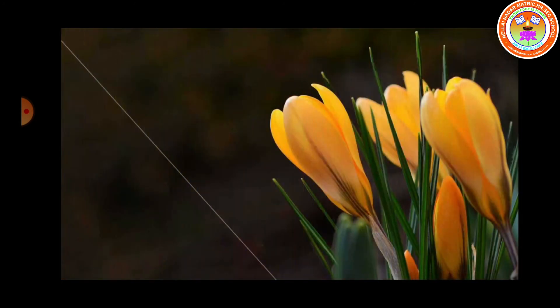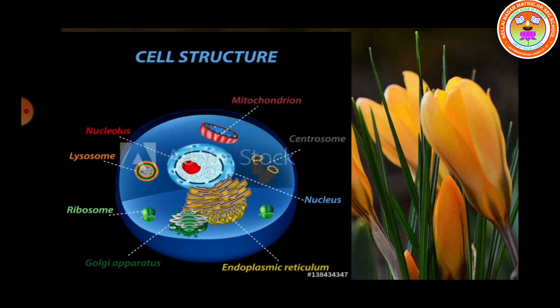Now let us move on to the eukaryotic cell. The eukaryotic cell has a true nucleus — you can see the nucleus in the center. Eukaryotic cells are bigger than prokaryotic cells, and you can see all the cell organelles suspended in the cytoplasm. They are mature cells. Examples include all plants, animals, and most fungi and algae.